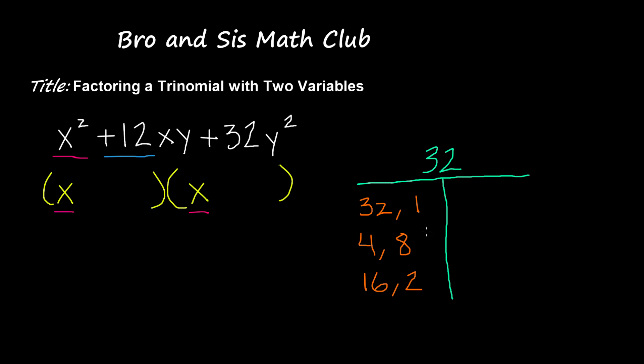Now when we add 32 and 1, we get 33. So this is one factor pair that we're not going to use.